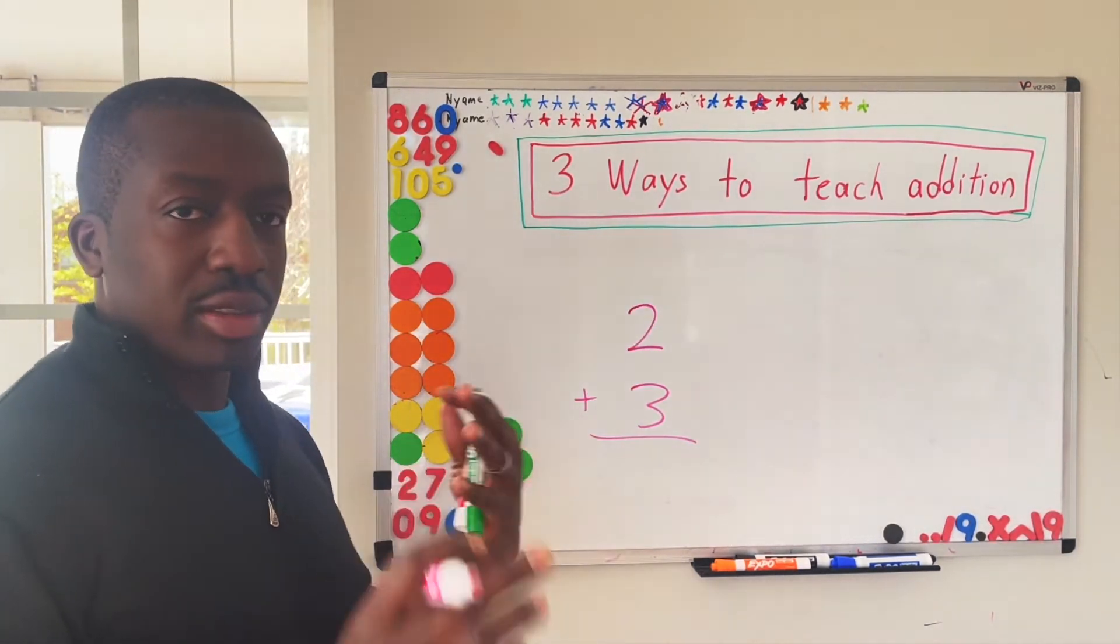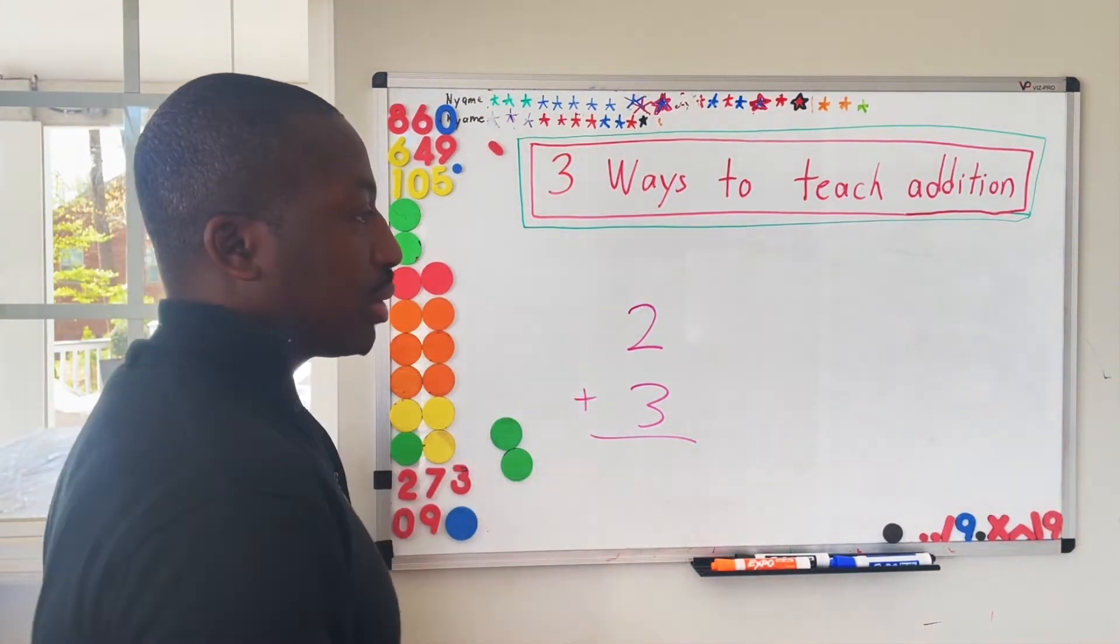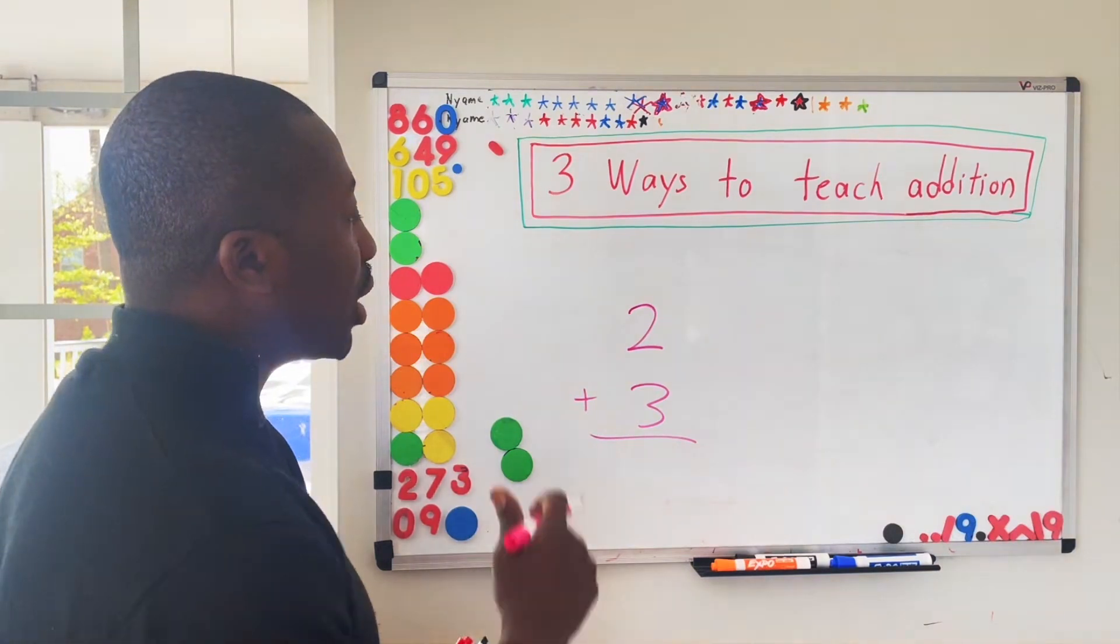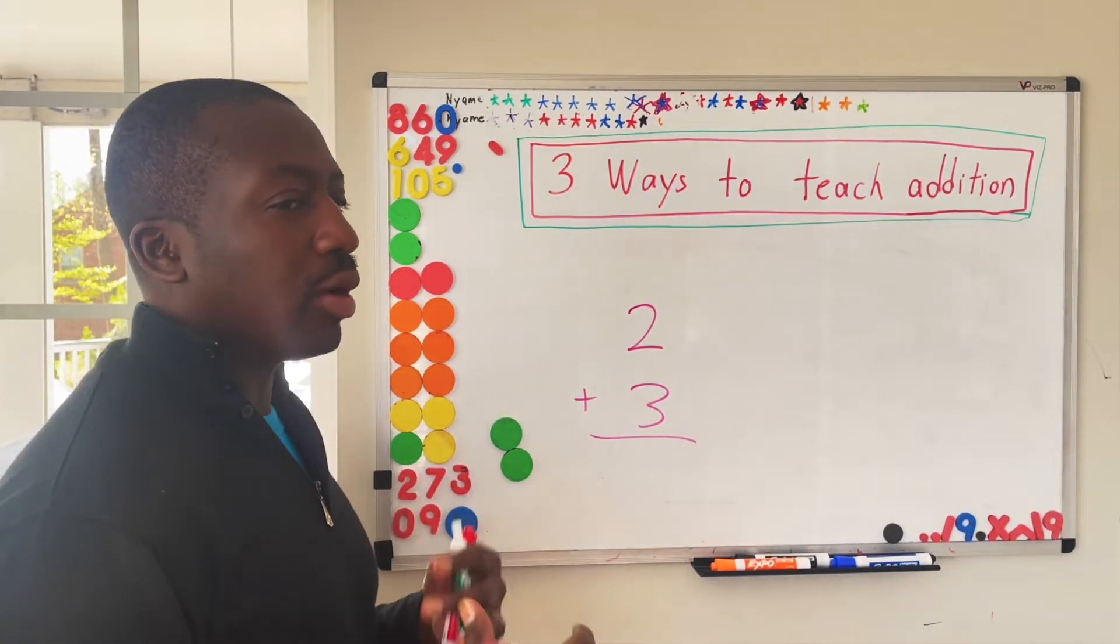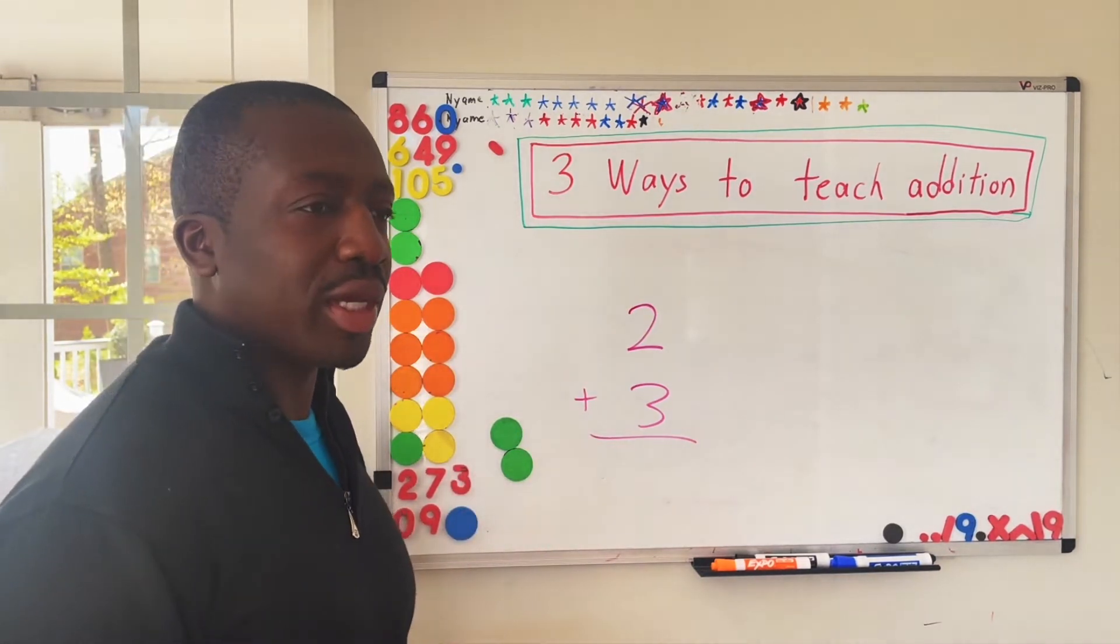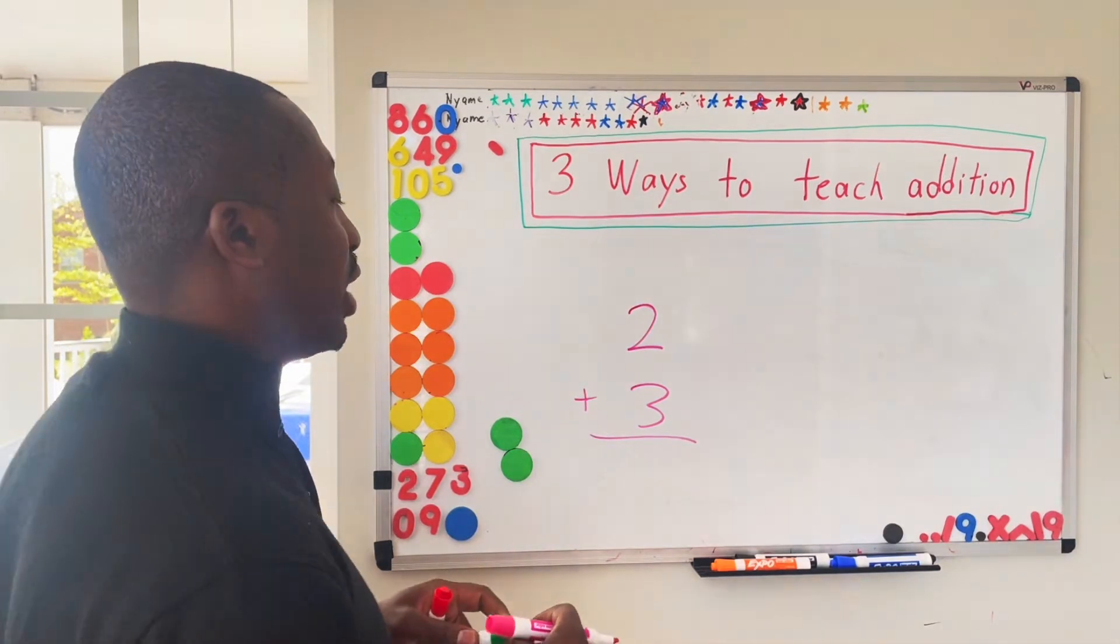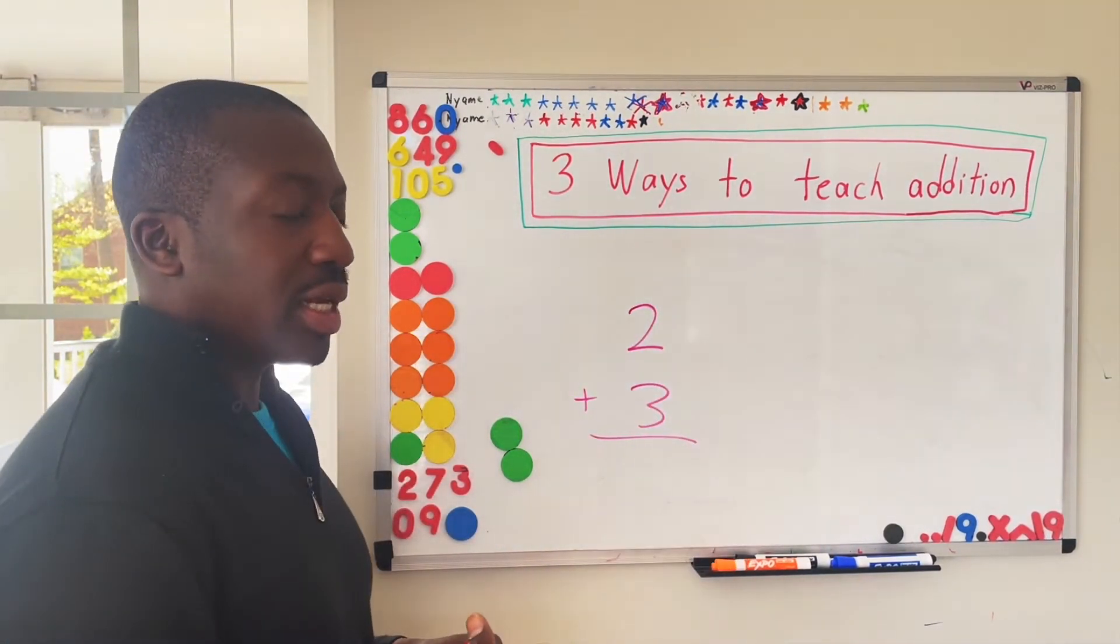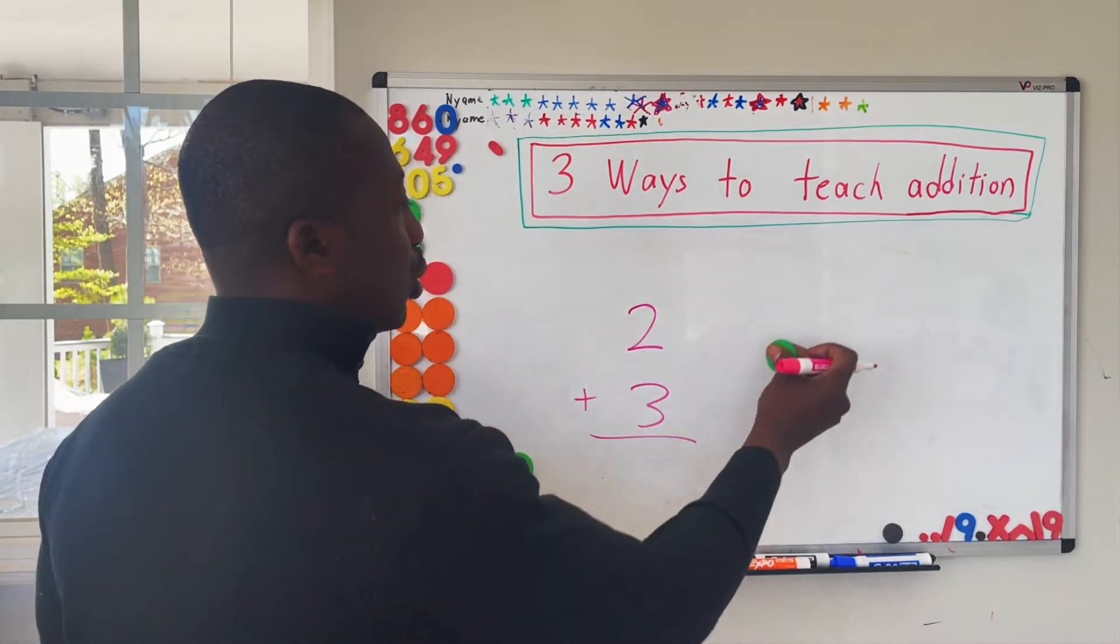Before they even try to count fingers or do anything, I would say, what number is this? And they would say the number two. I say, what does that mean to you? What does that number two mean? And oftentimes children will look and they don't really understand what that question means. And so I would then redirect it. Does this mean that we have two chickens, two cows? Does that mean we have one? And sometimes I'll even say, this is the number two.